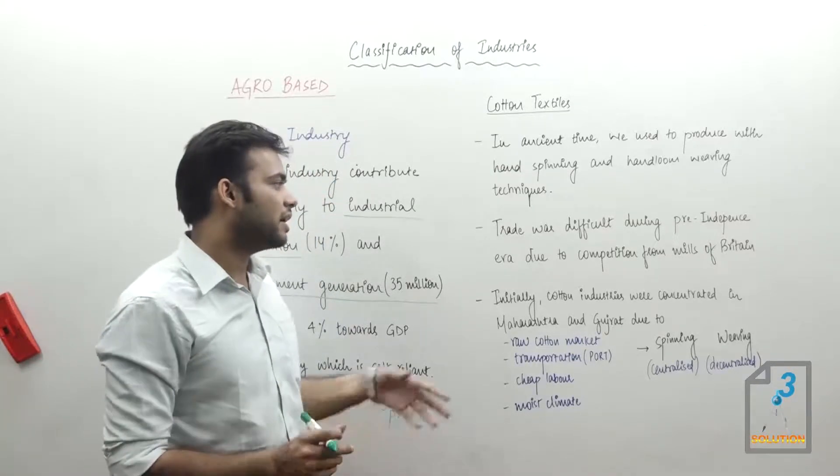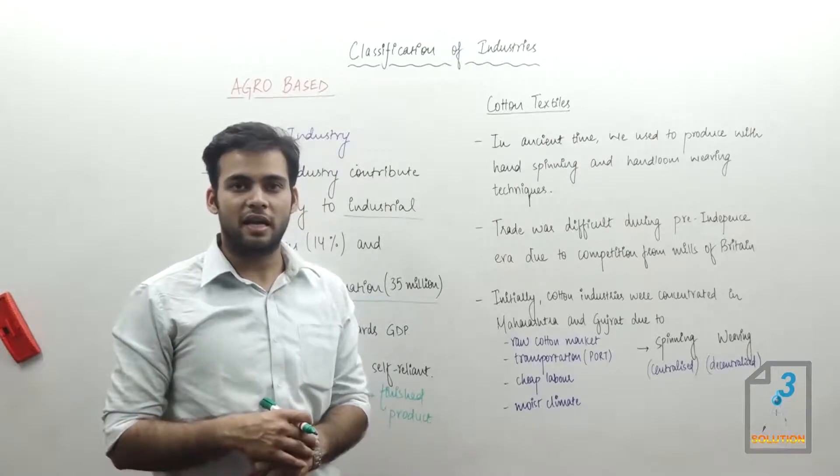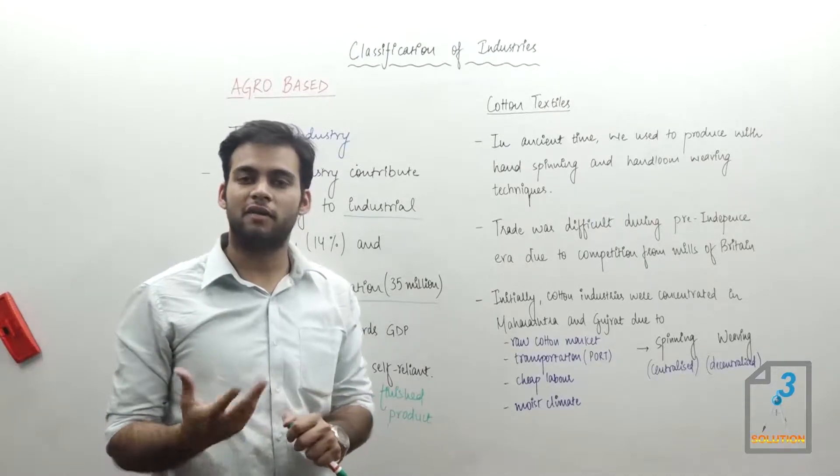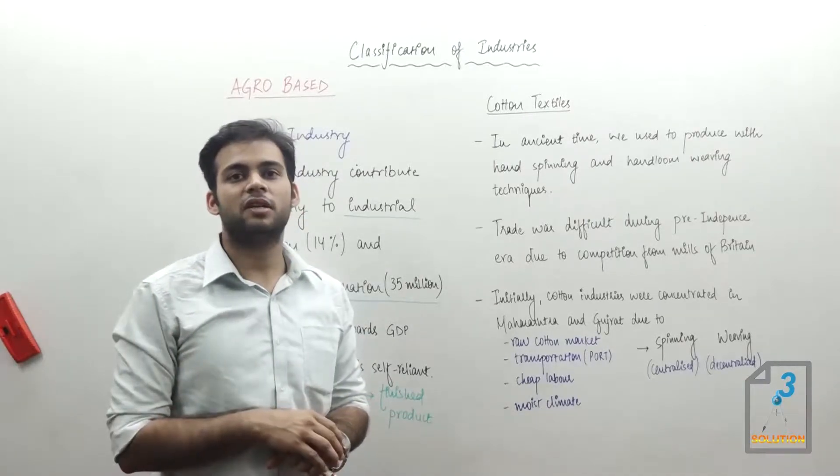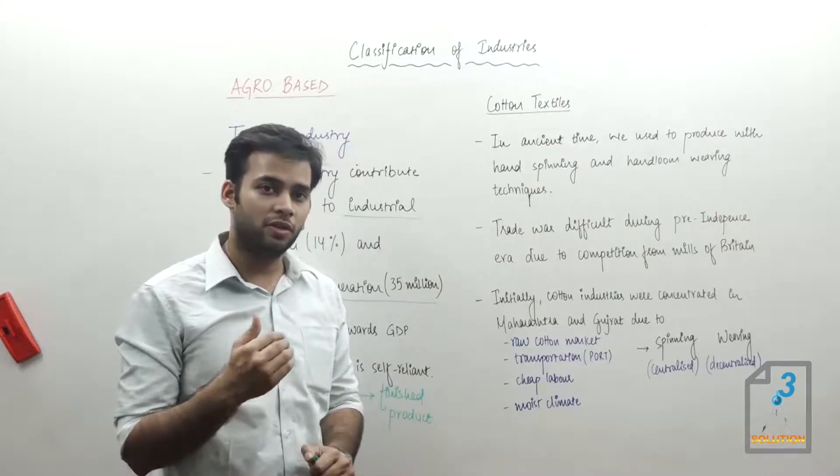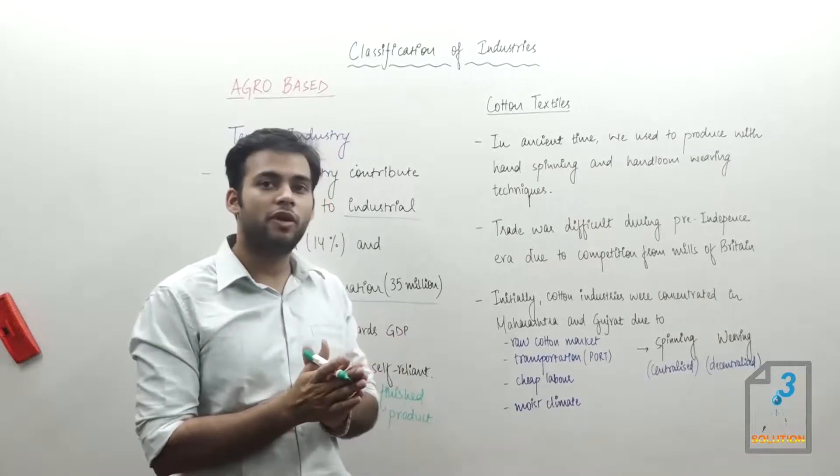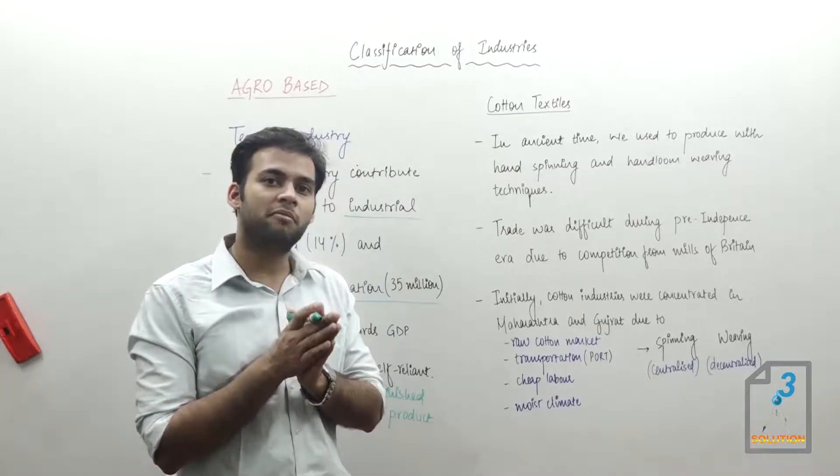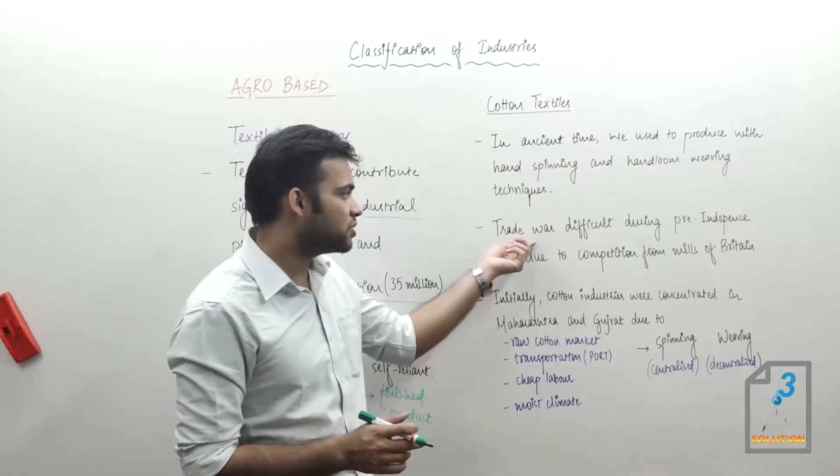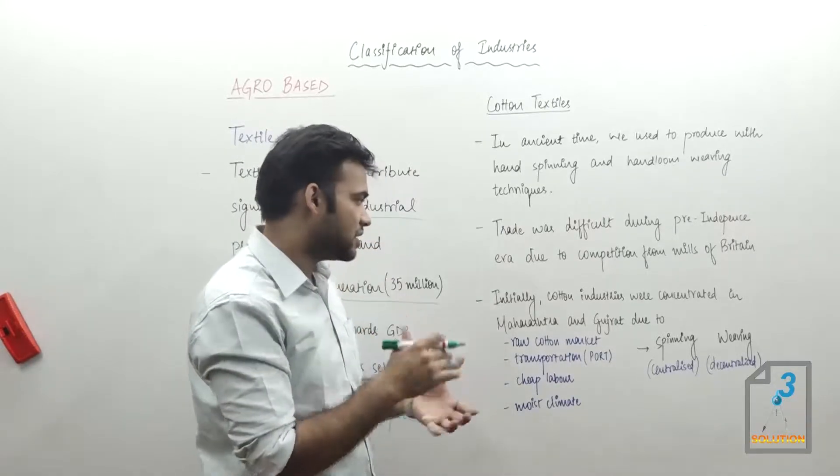Another point is in the pre-independence era, it was difficult for us to trade because whatever we were growing in our land, the British were taking it away and using it in their own mills. Then they used to bring back that finished product and sell in Indian markets. This was very difficult.